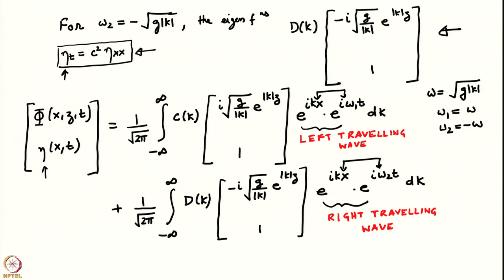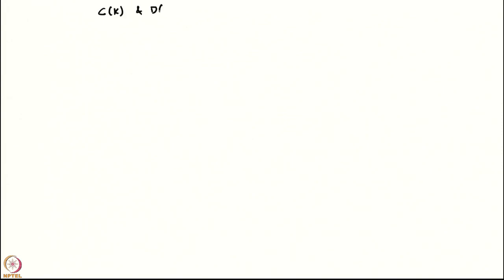Let us proceed further. Our task is now to determine c(k) and d(k) in terms of the initial conditions. Intuitively it is clear that c(k) and d(k) are going to be related to the Fourier transform of η₀(x) and φ₀(x). Let us find out the exact formula which gives us c(k) and d(k) in terms of the Fourier transforms of those functions.